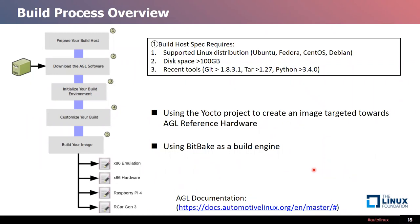This is the AGL image development workflow. It consists of setting up the build host that builds the image using the Yocto project to create an image targeted towards specific hardware. First, you need to prepare a build host that meets the required specifications. Second, download the AGL software. Then initialize the build and customize for the target machine, like reference hardware. Finally, build your image using BitBake as the build engine of the Yocto project. I'll show these hardware build steps from the next page.